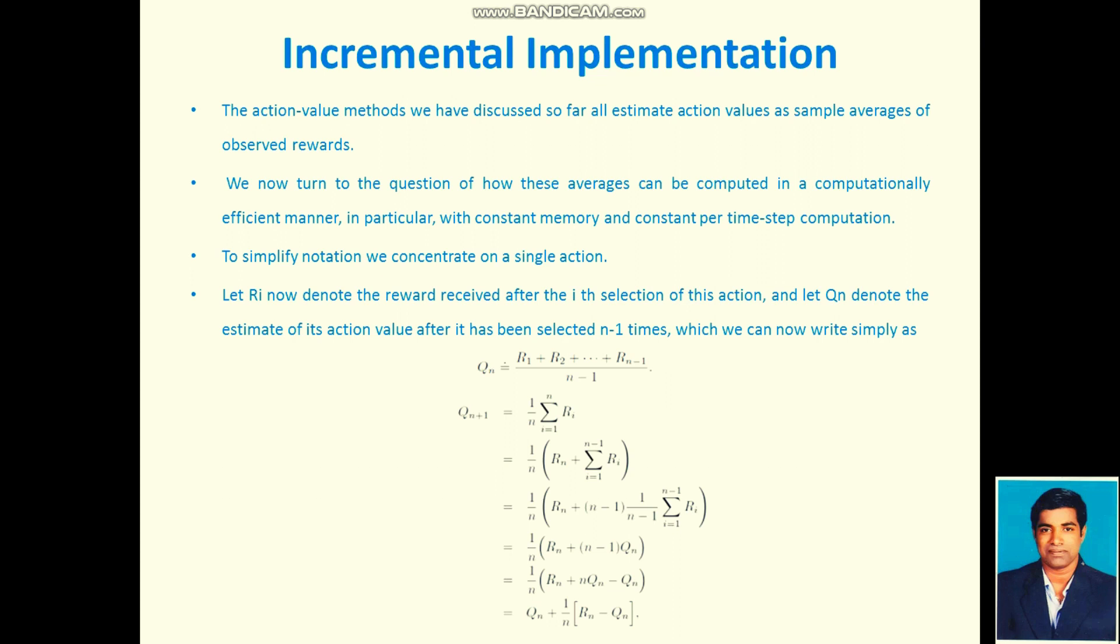Already you know, 1 by n of summation i equals 1 to n Ri is Qn. So we are replacing that. Here we are replacing 1 by n minus 1, sum of i equals 1 to n minus 1, Ri with Qn.